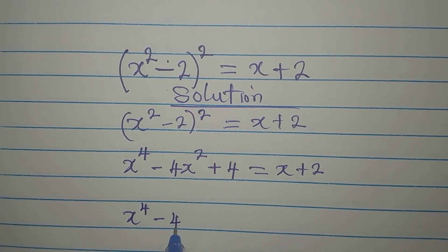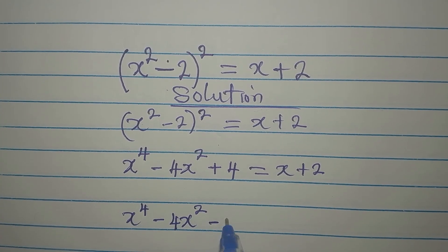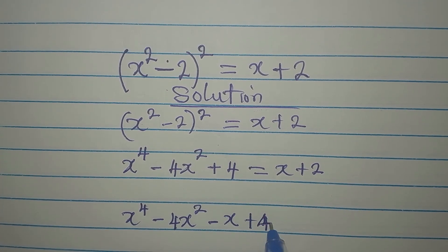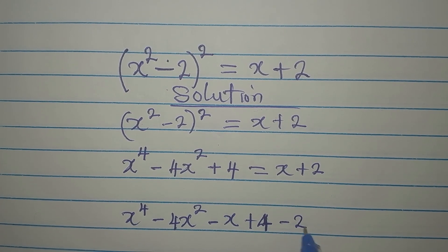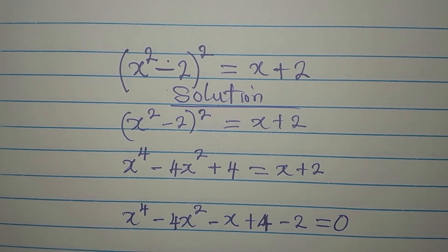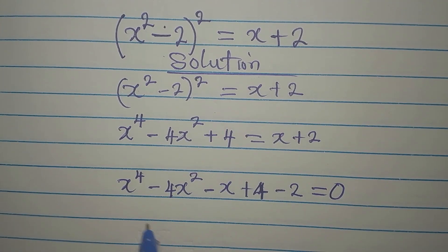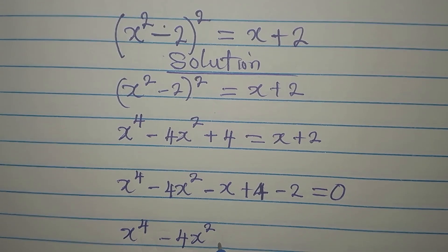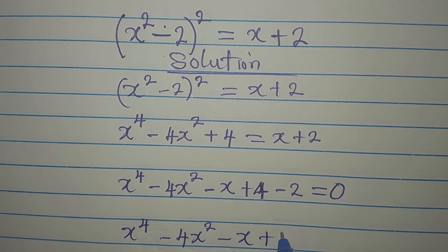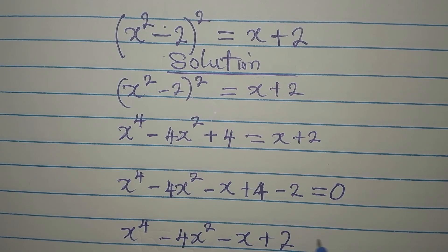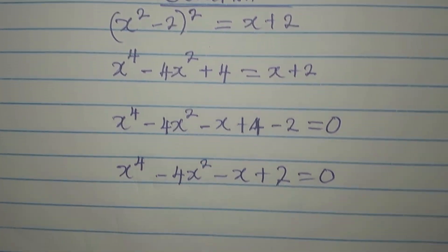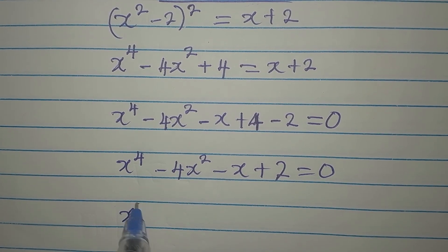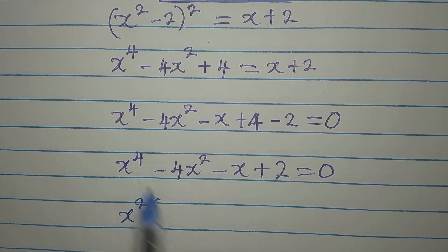Now let us collect terms: x to the power of 4 minus 4x squared — this becomes minus x — then plus 4 minus 2 on the left-hand side, everything equals 0. So x to the power of 4 minus 4x squared minus x, and 4 minus 2 is 2, equals 0.